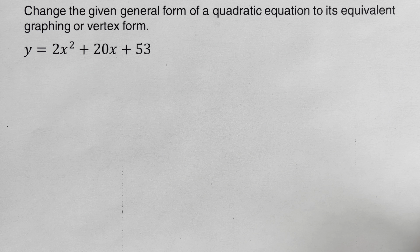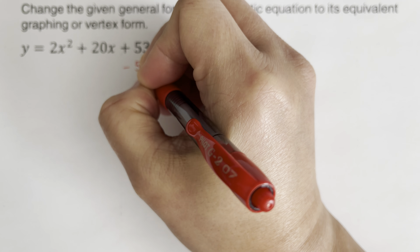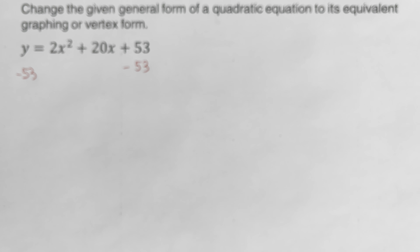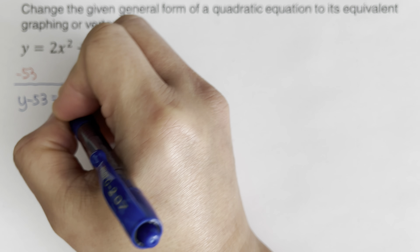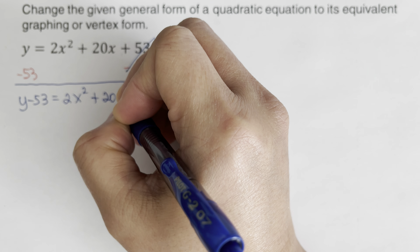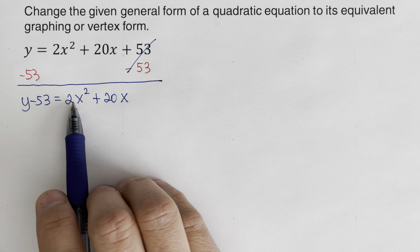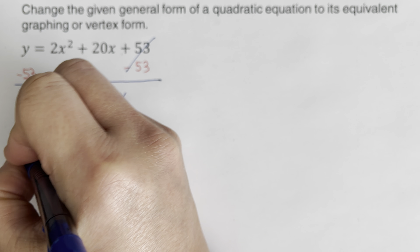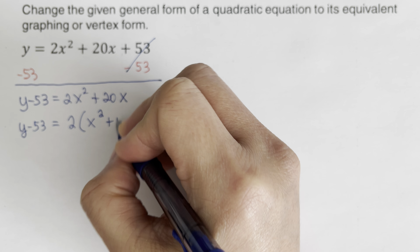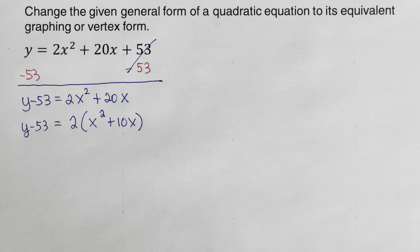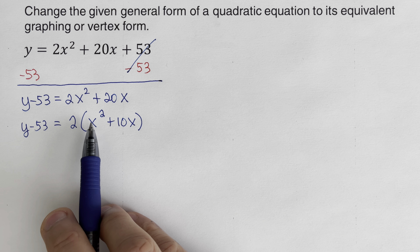For the second problem, we first subtract the constant 53 from both sides, giving y minus 53 equals 2x squared plus 20x. Then, since we need x by itself, we factor out 2: y minus 53 equals 2(x squared plus 10x). We verify with the distributive property: 2 times x squared is 2x squared and 2 times 10x is 20x.